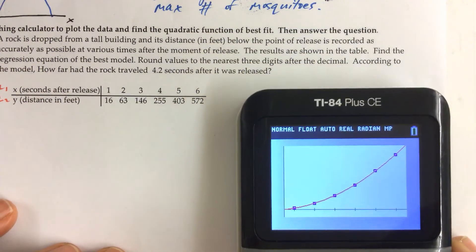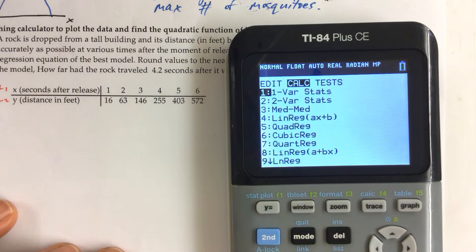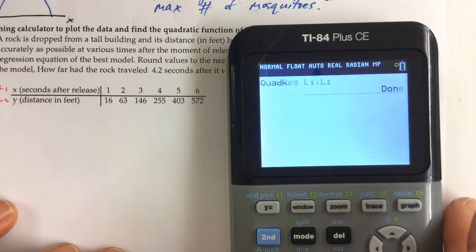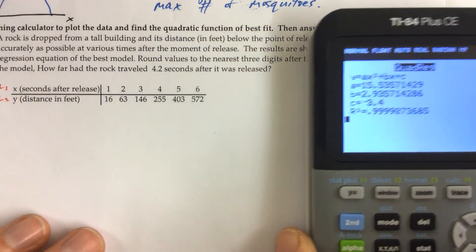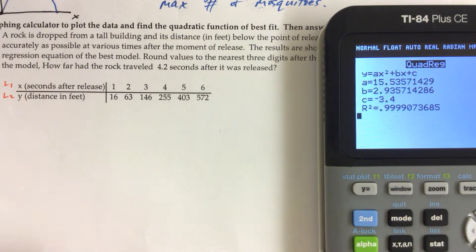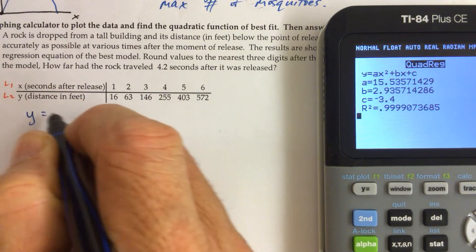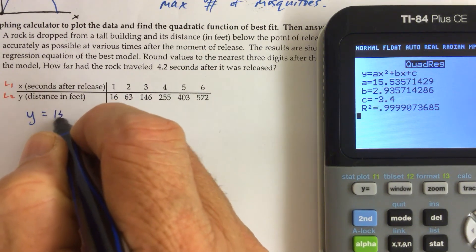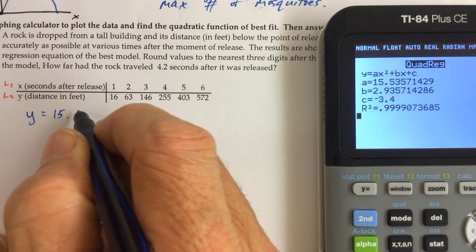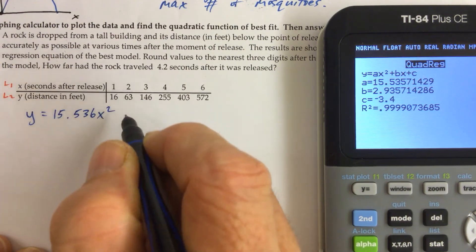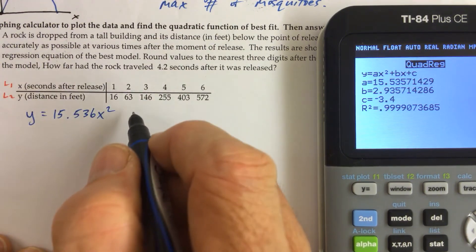And now I didn't write down what those parameters were. So let me go ahead and do that. The parameters are the A, the B, and the C. So we have the quadratic regression model is Y equals A times X squared, so 15.536, always going to round your numbers to the nearest three digits after the decimal.